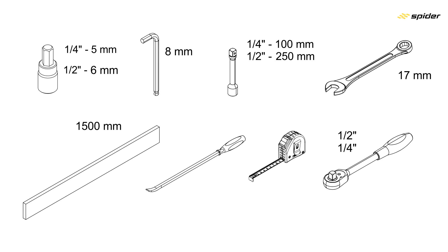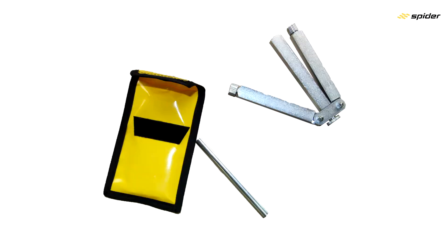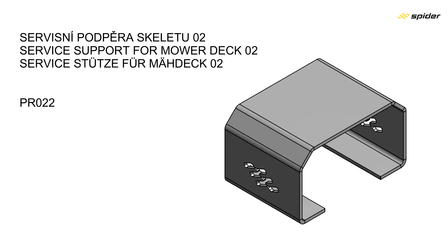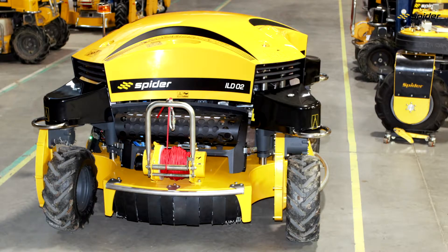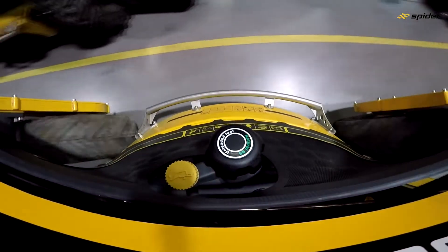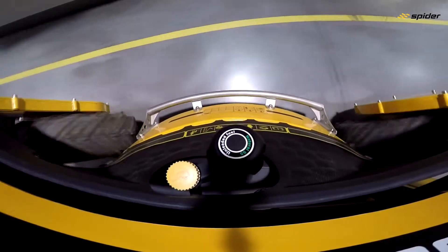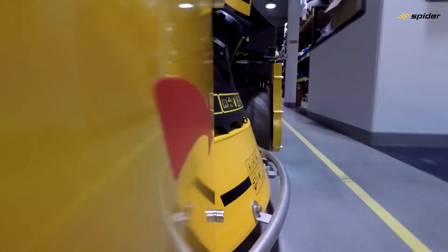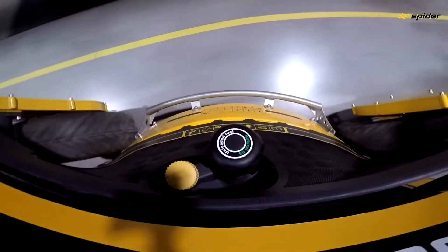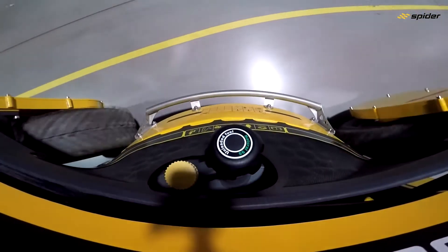Tools needed for geometry adjustment. Wrongly adjusted geometry causes unwanted machine rotation around its vertical axis. You can do the control easily on flat terrain where, after driving a few meters, you can see how much the mower turned around its axis.